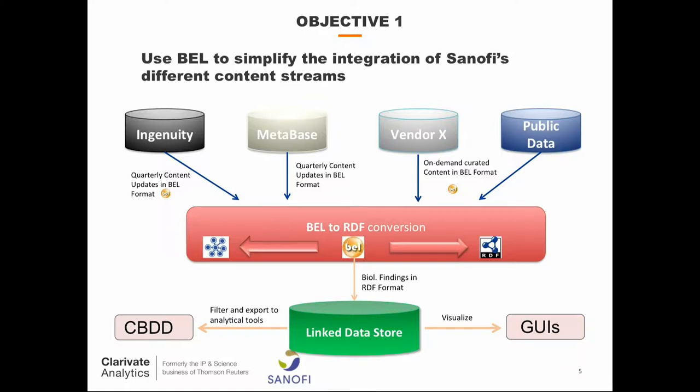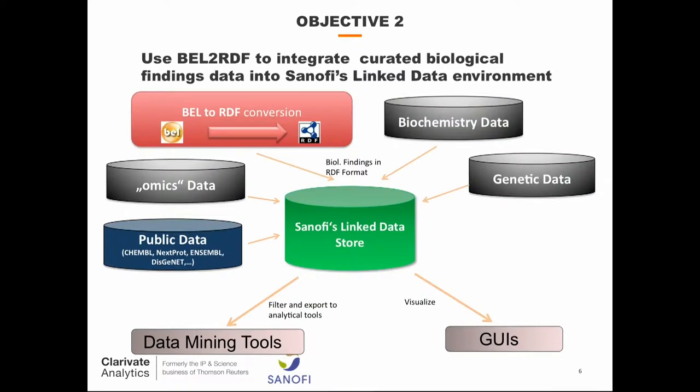So the first goal was simplicity, and then the main goal — the second goal — was integration. At the moment, that is fully functional, and they keep adding data every day into the Sanofi linked data store. They have a variety of biochemistry, genetics, tons of various public databases and ontologies, omics data, and then our proprietary content — not just from Clarivate, formerly Thomson Reuters, but also from several other proprietary data sources.